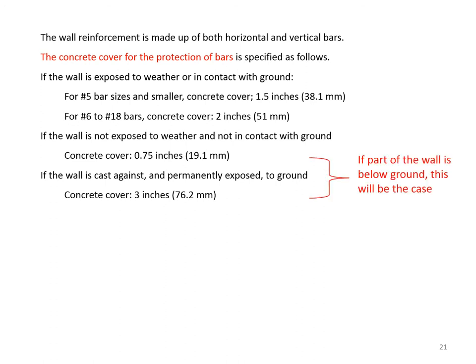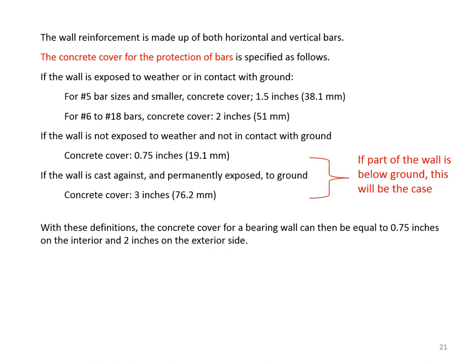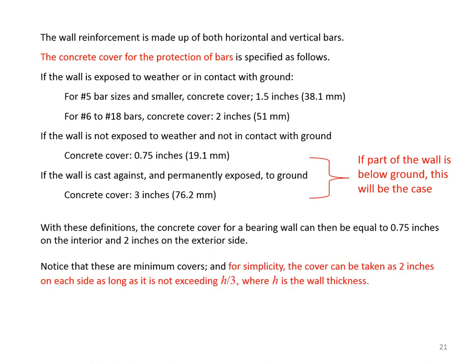If part of the wall is below ground, we need to pay attention to that. The concrete cover for a bearing wall can be 0.75 inches on the interior and 2 inches on the exterior side. For simplicity, cover can be taken as 2 inches on each side, as long as it does not exceed h/3, where h is the wall thickness.